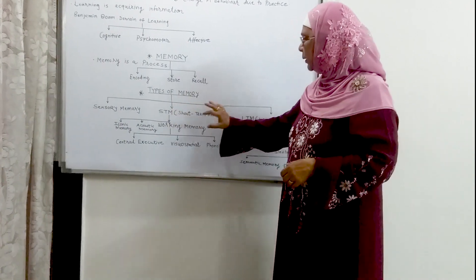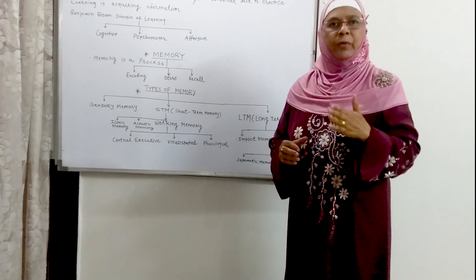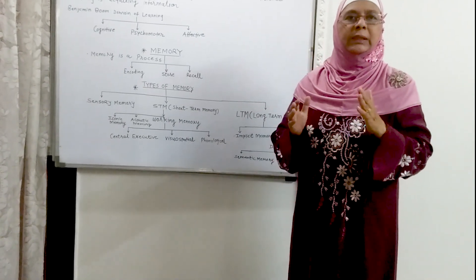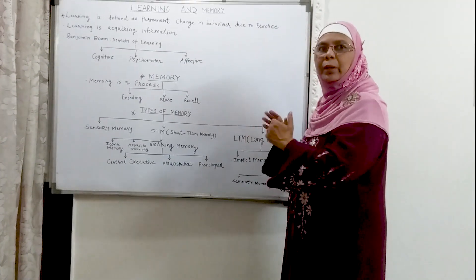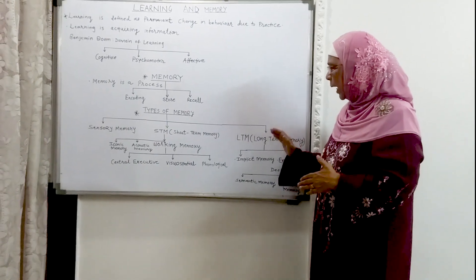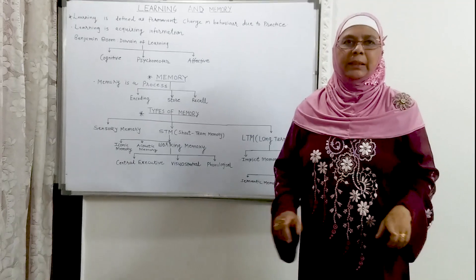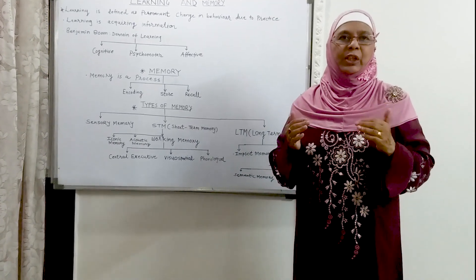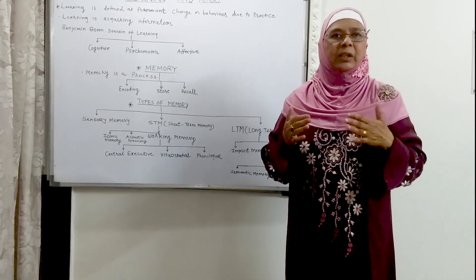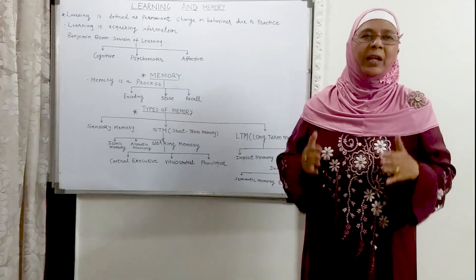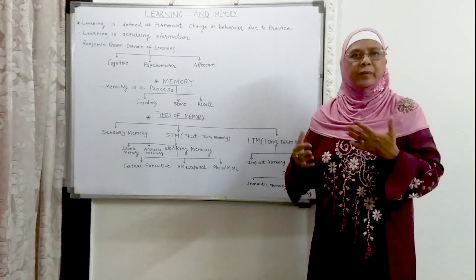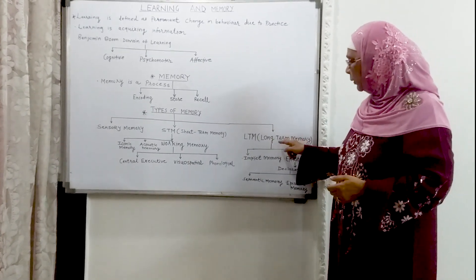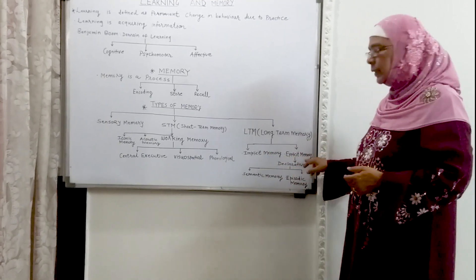From short-term memory, the information has to come to long-term memory. The condition is that we have to rehearse, repeat, and relearn the information. The more systematically we relearn it, the more systematically it is stored in long-term memory. In long-term memory, as the name indicates, we have unlimited capacity. We can keep the information for minutes, hours, days, months, years, and a lifetime. Long-term memory has unlimited capacity and we can recall information from here. It is divided into two types: implicit memory and explicit memory.